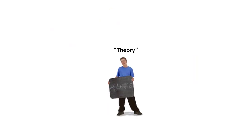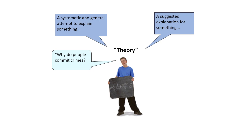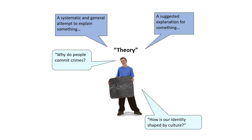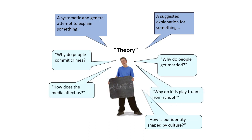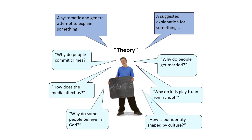So, what's a theory? It's a suggested explanation for something — a systematic and general attempt to explain something, and it answers a sociological question. For example: why do people commit crimes? Why do people get married? How is our identity shaped by culture? How does the media affect us? Why do kids play truant from school? Why do some people believe in God and others do not? Answers to these questions are all theories.